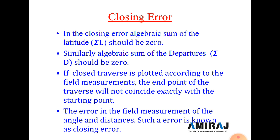Hello students, today we start a new topic in chapter number two, module number two: theodolite traverse. The topic is closing error. In a closing error, the algebraic sum of the latitudes should be zero and the algebraic sum of the departures should be zero. We already discussed latitude and departure in the last lecture. If a closed traverse is plotted according to field measurements and the end point does not coincide exactly with the starting point, some error is generated — this is called a closing error, caused by errors in measurement of angles or distances.